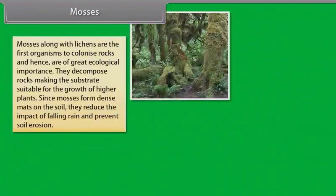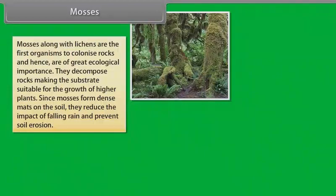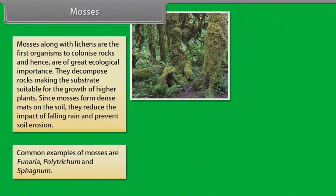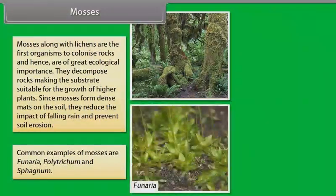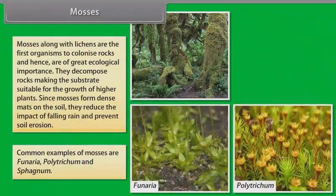Mosses, along with lichens, are the first organisms to colonize rocks and hence are of great ecological importance. They decompose rocks, making the substrate suitable for the growth of higher plants. Since mosses form dense mats on the soil, they reduce the impact of falling rain and prevent soil erosion. Common examples of mosses are Funaria, Polytrichum, and Sphagnum.